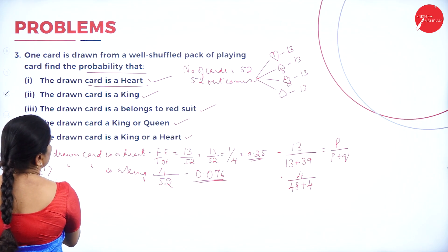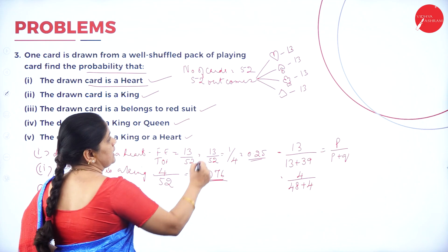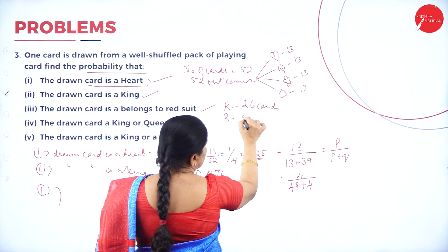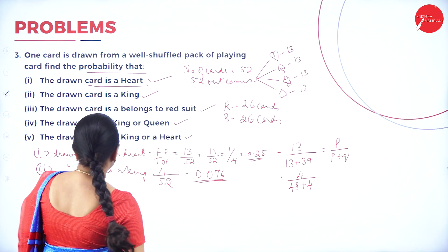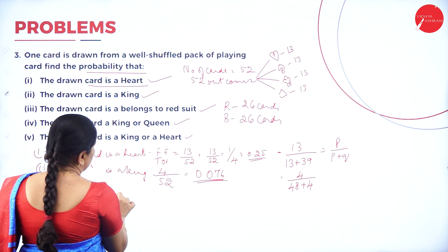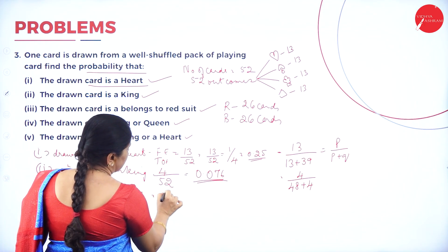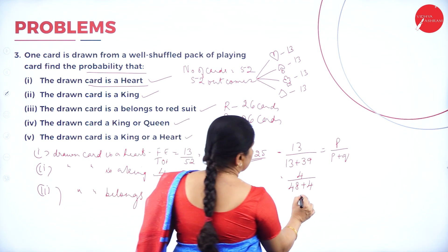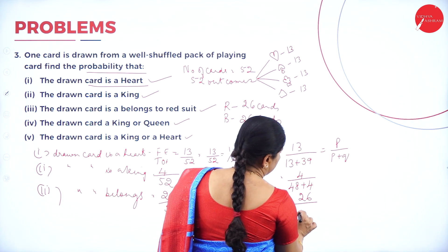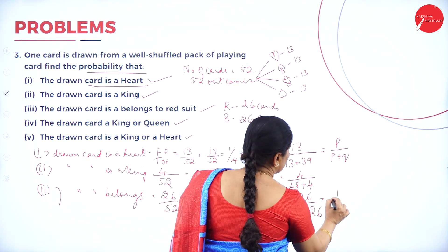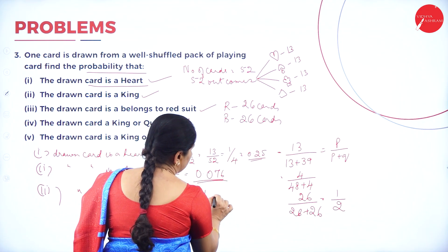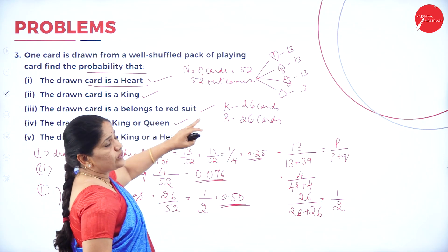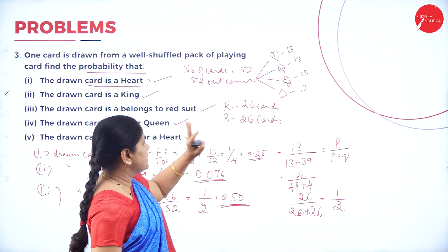The third one: the drawn card belongs to a red suit. We should understand that the red suit has 26 cards and the black suit has 26 cards. So the drawn card belongs to a red suit — it will be 26 out of 52. Writing it in P by Q form: 26 divided by 26 plus 26, that equals 1/2, or 0.50. The chance of getting a drawn card belonging to a red suit is half — you may get a red card or a black card.